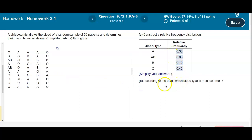Okay now it says, according to the data, which blood type is most common? Meaning if we look at this as a percent, which one would have the most?